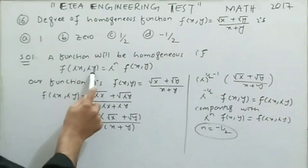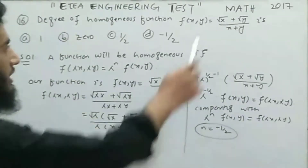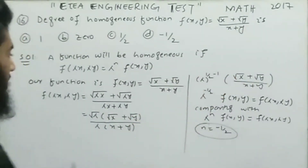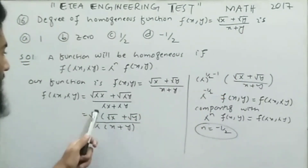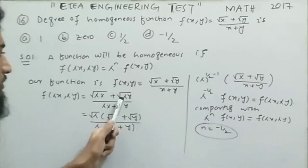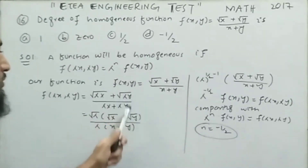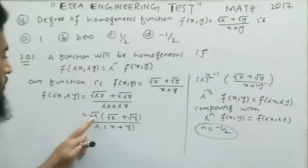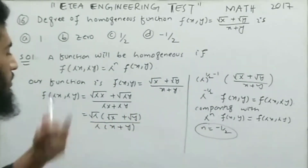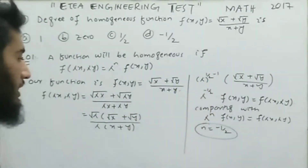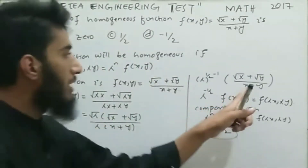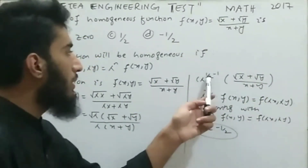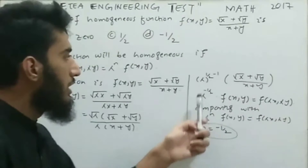Substituting, f(λx, λy) = (√(λx) + √(λy)) / (λx + λy). In the numerator, taking out √λ common leaves √x + √y; in the denominator, taking out λ common leaves x + y. So we have λ^(1/2) in the numerator and λ¹ in the denominator. Moving λ to the numerator gives λ^(1/2 − 1) = λ^(−1/2) times f(x, y).